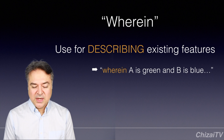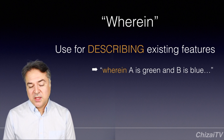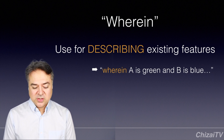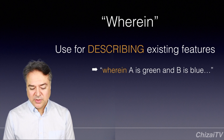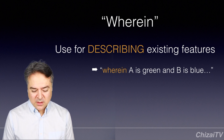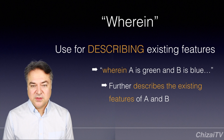For example, you say 'wherein A is green and B is blue.' We're not adding anything new in terms of elements to the claim; we are describing existing ones. So we're describing that A is green and B is blue, but A and B already exist — we are further describing the existing features of A and B.